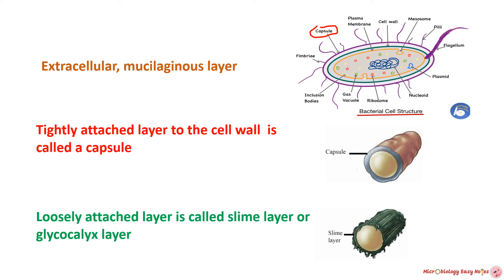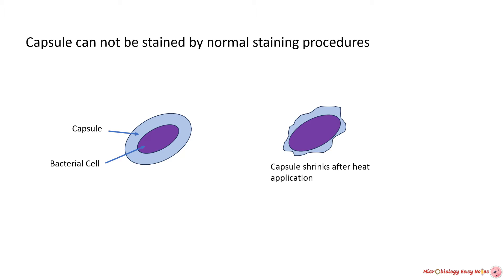The capsule is located immediately exterior to the peptidoglycan layer of gram-positive bacteria and the outer membrane, which is the lipopolysaccharide layer, of gram-negative bacteria. To observe the presence of a capsule in a bacterial cell we require special staining procedures, since capsule cannot be characterized by standard staining techniques.